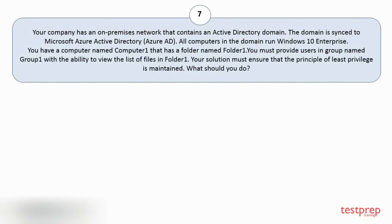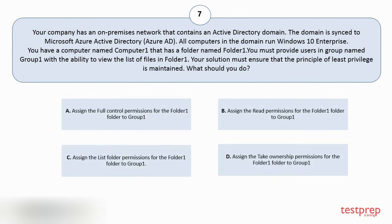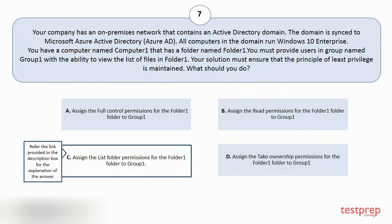Question number seven. Your company has an on-premises network that contains an Active Directory domain. The domain is synced to Microsoft Azure Active Directory. All computers in the domain run Windows 10 Enterprise. You have a computer named Computer1 that has a folder named Folder1. You must provide users in a group named Group1 with the ability to view the list of files in Folder1. Your solution must ensure that the principle of least privilege is maintained. What should you do? Options: A. Assign full control permissions for Folder1 to Group1. B. Assign read permissions for Folder1 to Group1. C. Assign list folder permissions for Folder1 to Group1. D. Assign take ownership permissions for Folder1 to Group1. The correct answer is option C.